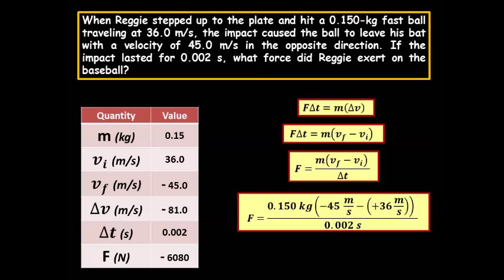Now, I have plugged in to the equation. Notice I actually plugged in vf minus vi. And by inspection, you should see that negative 45 meters per second minus a positive 36 meters per second would indeed equal negative 81.